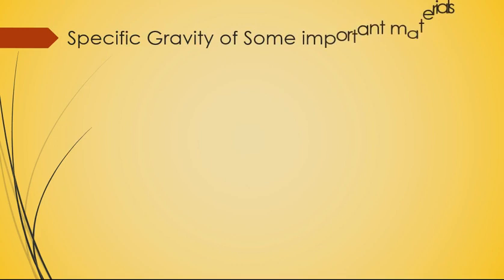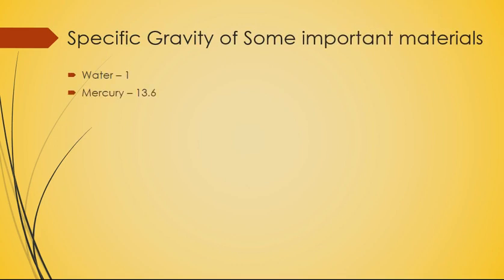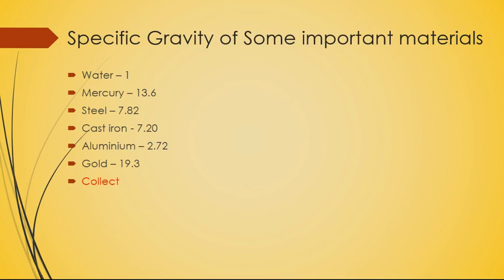Specific gravity values of important materials include: water at 1, mercury at 13.6, steel, cast iron, aluminium, and gold. Students are asked to collect specific gravity values of additional materials.